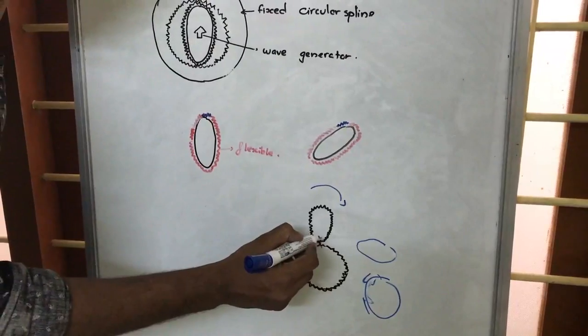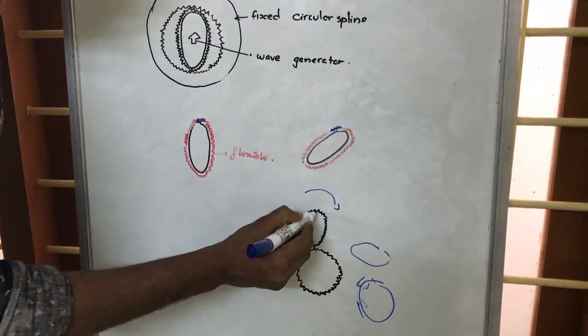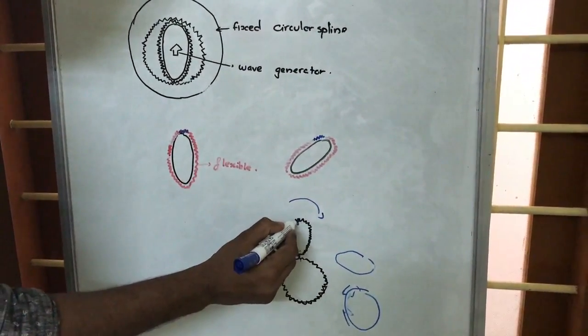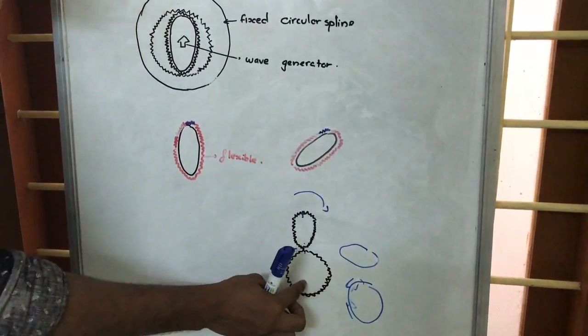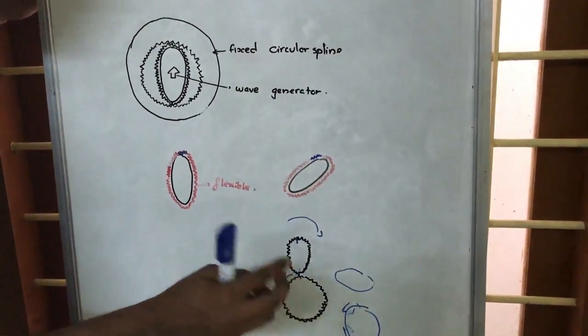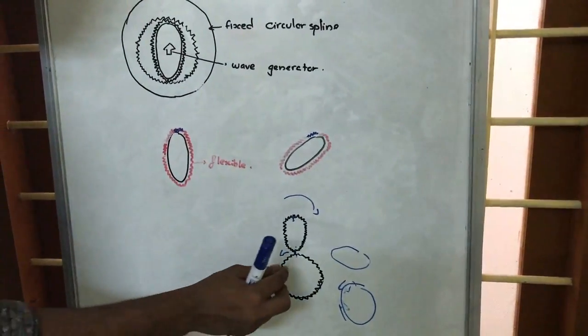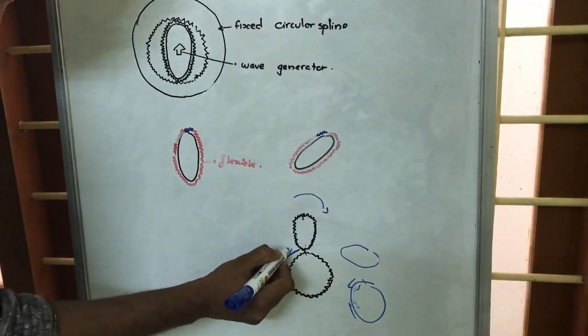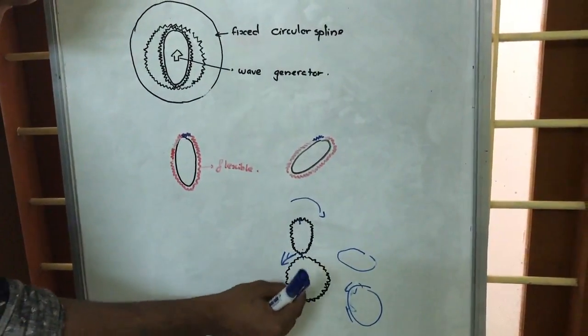...after the half revolution, this part reaches this position and the teeth here come here and lock with the circular gear. So after one complete revolution there is a movement in such a way that two teeth of the circular gear will be moving in the anti-clockwise direction.